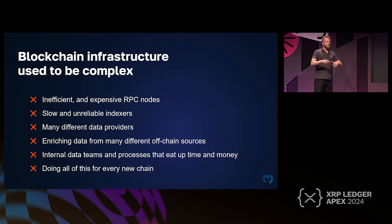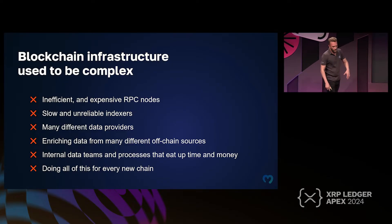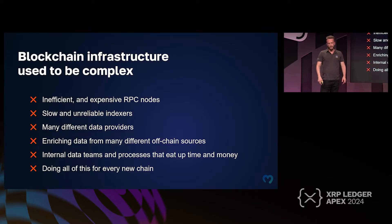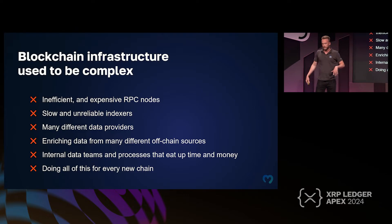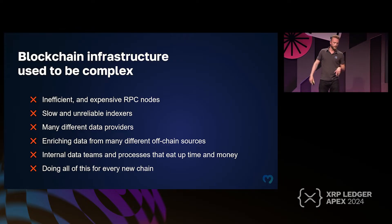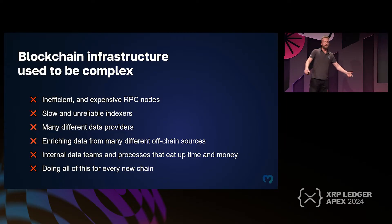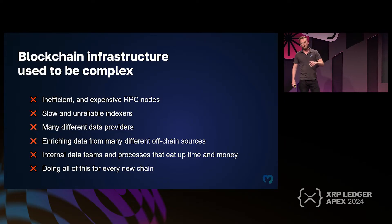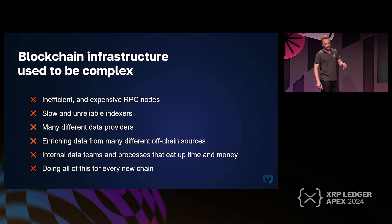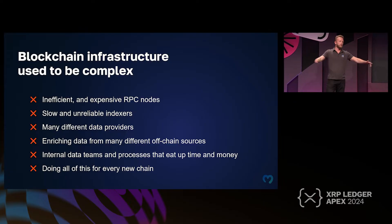Blockchain infrastructure used to be — and still is, to a large degree — complex, inefficient, with slow indexers and unreliable tech. You combine data providers from many different sources and have to enrich it with off-chain data for prices or NFT metadata. It turns out you build up enormous teams internally just to handle this, which wastes time and money you could have spent going to market — and you have to do all of this for every chain you want to be active on.